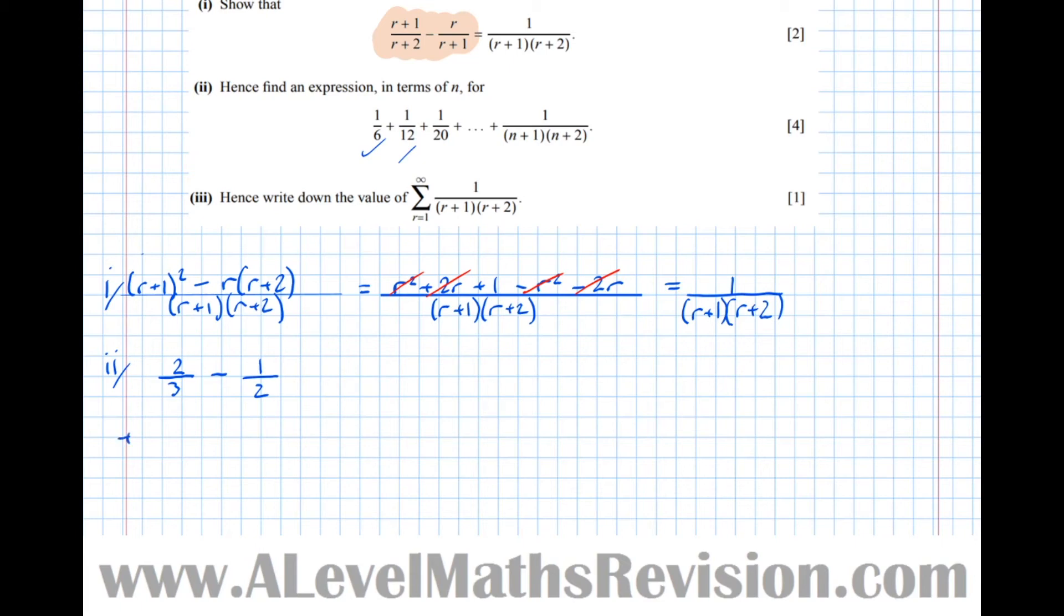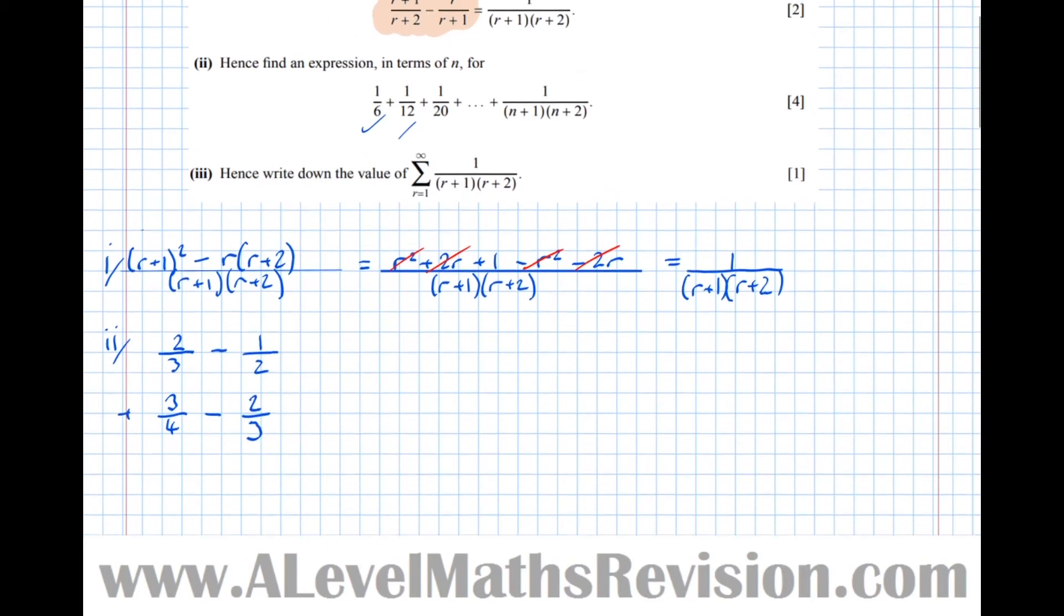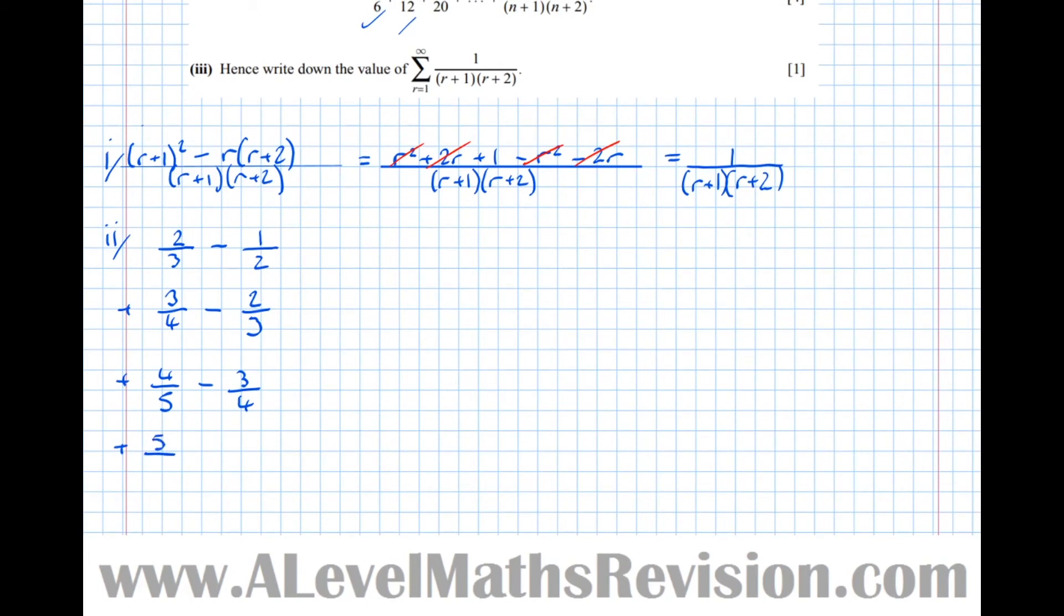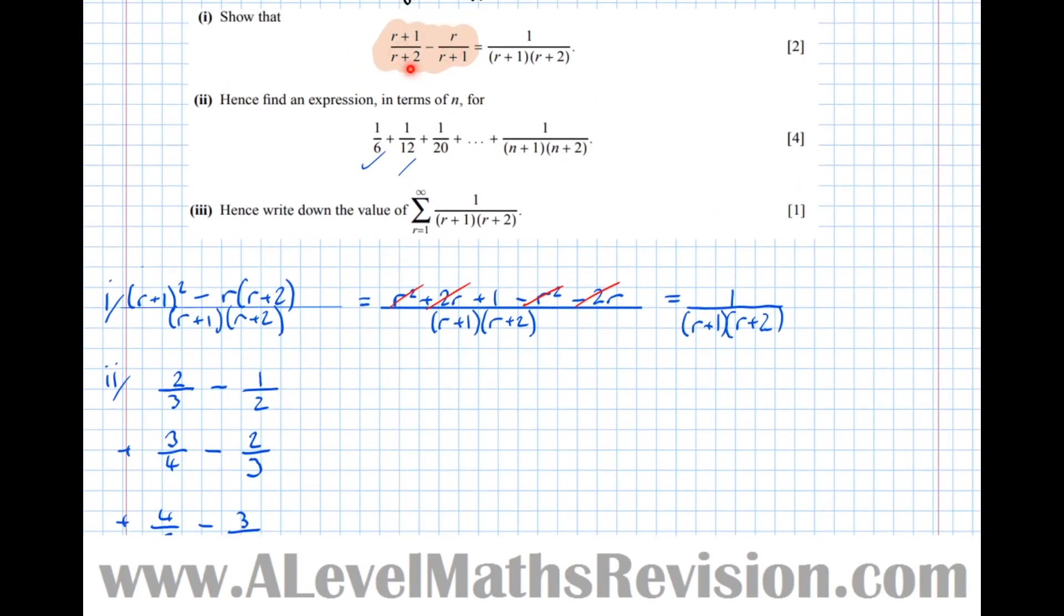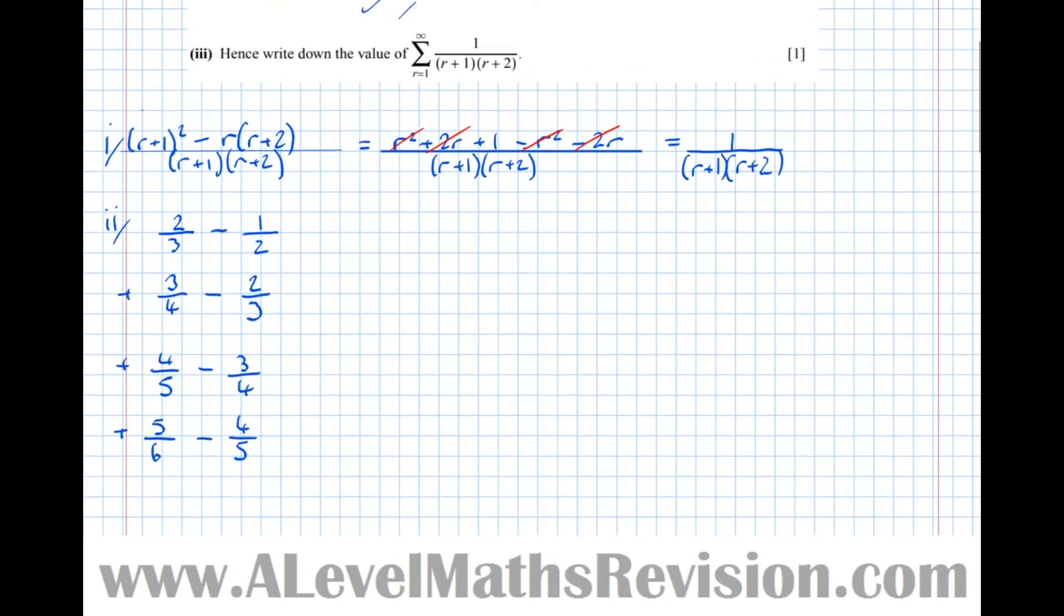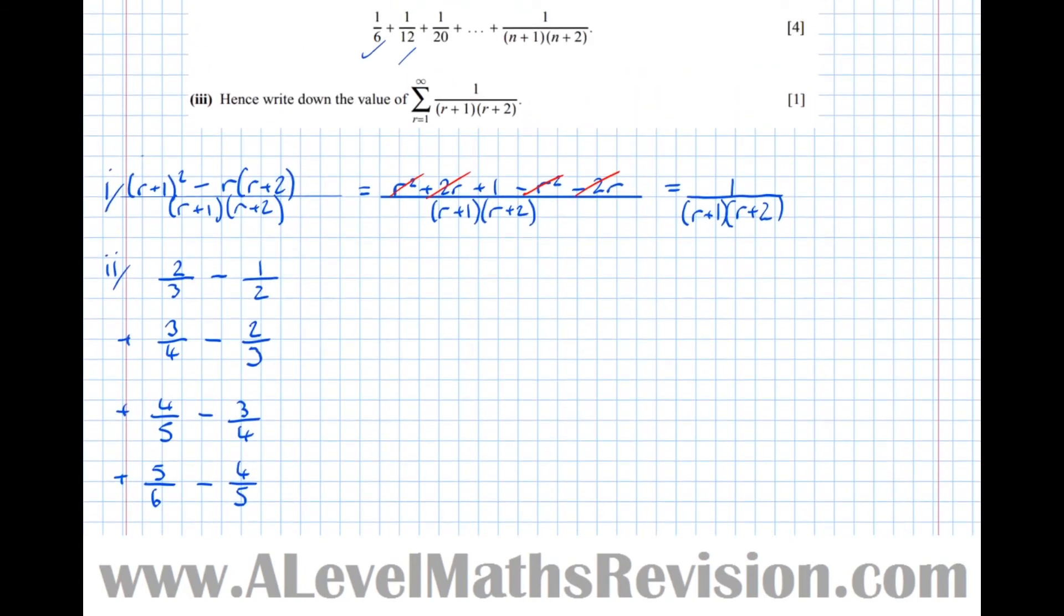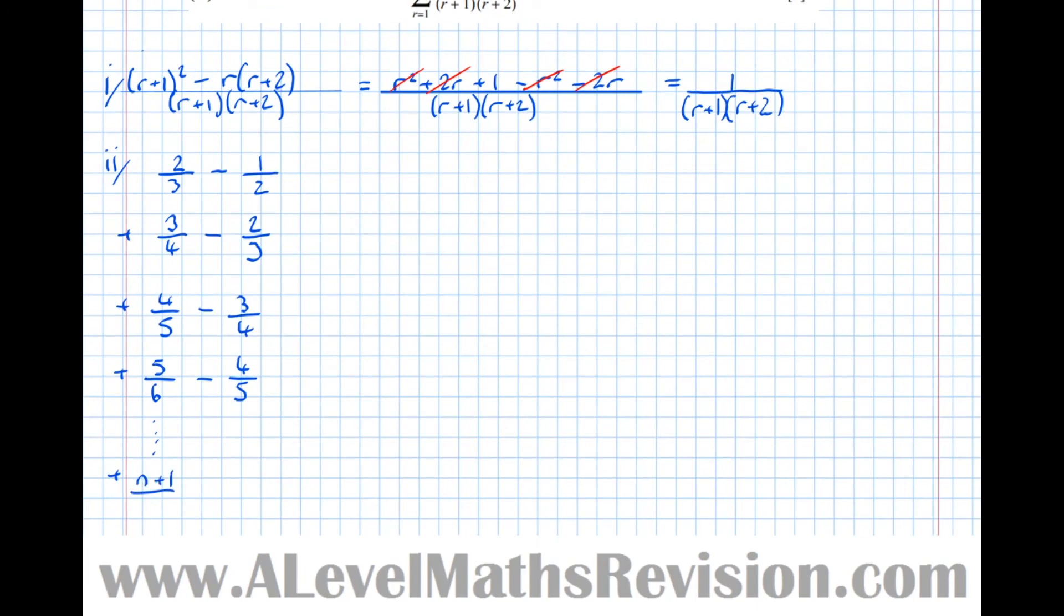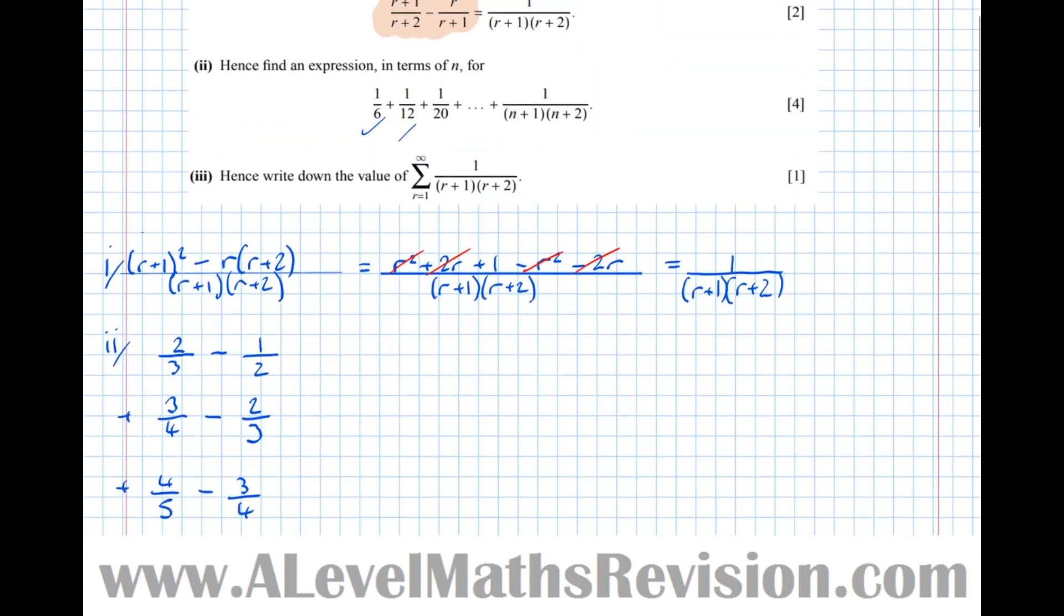So now for r equals 2, we're going to add on 3 over 4. Take, for r equals 2, 2 over 3. Then, we're going to add on 4 over 5, and take 3 over 4. Put the formula. Then, we're going to add on 5 over 6, and take 4 over 5. And we can see a pattern emerging here. So we're just using this formula here, subbing in r equals 1, r equals 2, all the way up to r equals n. So let's sub an n now. So we'll get n plus 1. Plus n plus 1 over n plus 2. Take. And it was n over n plus 1.